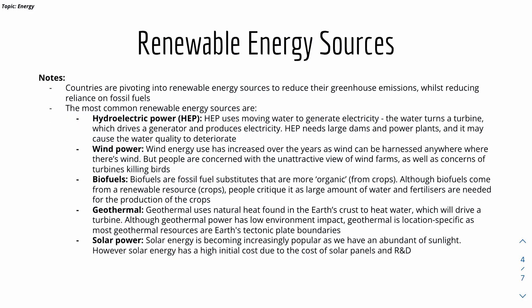HEP uses moving water to generate electricity and is often paired with a dam. The water turns a turbine which drives a generator and produces electricity. Wind power uses wind turbines placed on flat land in areas with a lot of wind, which turn a turbine and generator to produce electricity. However, there are concerns — people find them unattractive and worry about turbines killing birds as they fly through.